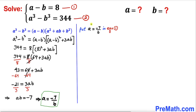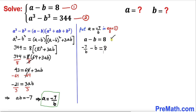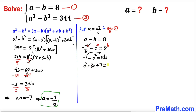Our next step is to plug a equals negative 7 divided by b into equation 1. Substituting: negative 7 divided by b, minus b, equals 8. Multiplying through by b to remove the fraction, we get negative 7 minus b squared equals 8b on the right hand side.